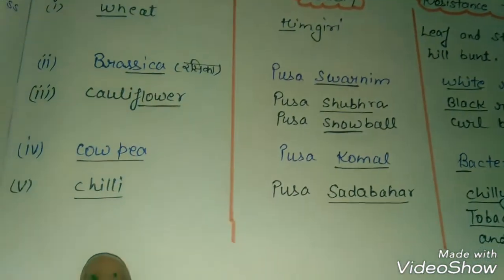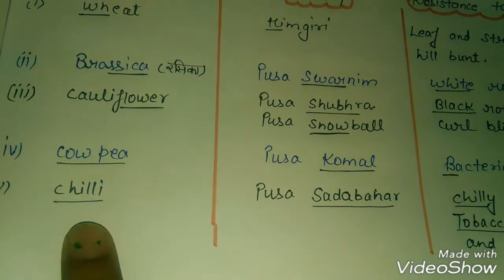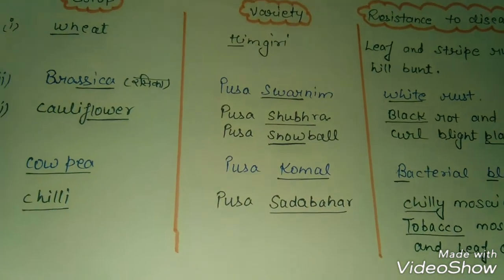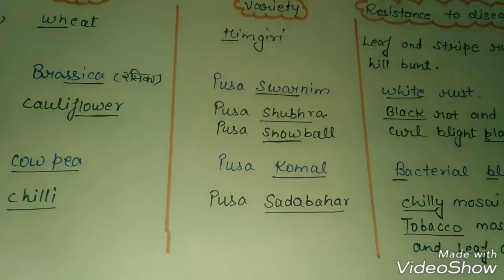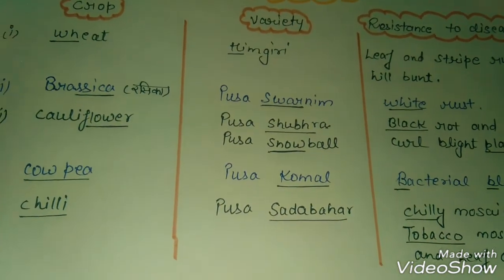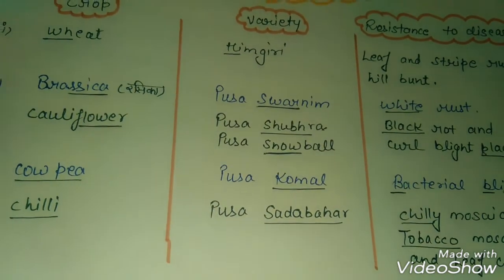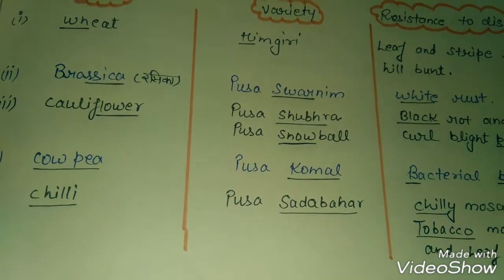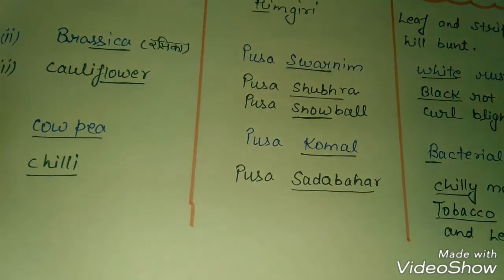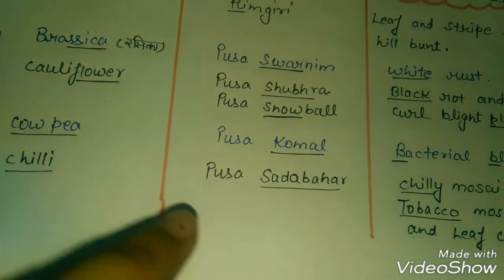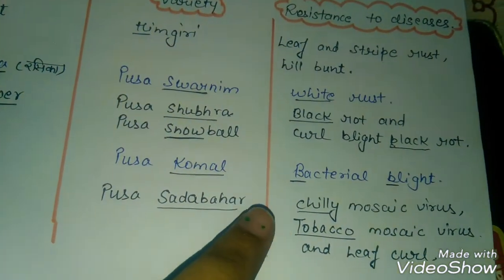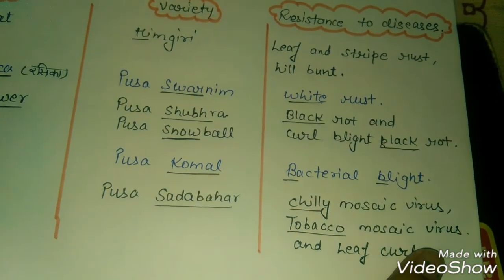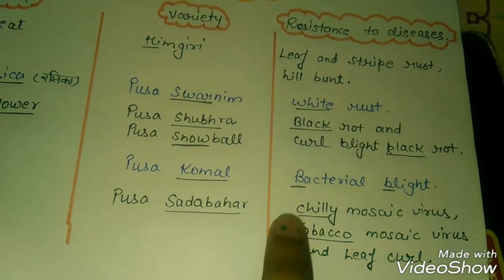Next crop is chili. The chili variety is Pusa Sadabahar. The disease resistances for chili are Chilli Mosaic Virus, Tobacco Mosaic Virus, and Leaf Curl. So chili variety Pusa Sadabahar is resistant to these three diseases.